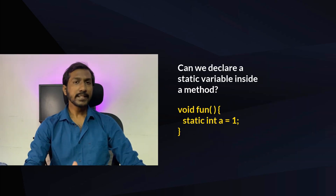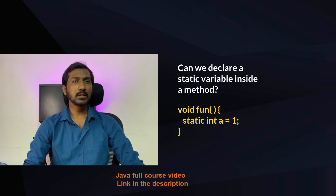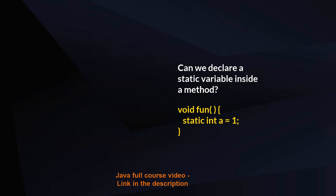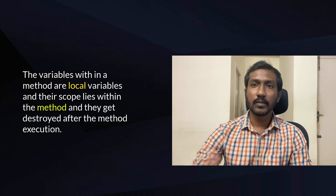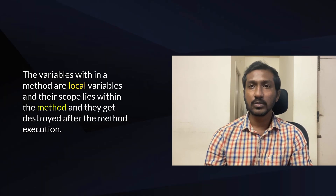Can we create a static variable inside a method? No, we cannot declare a static variable inside a method. A variable inside a method is meant to be used only within that method, so making it static has no meaning.